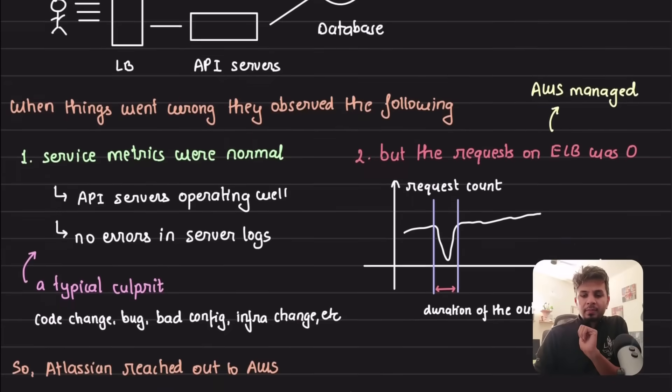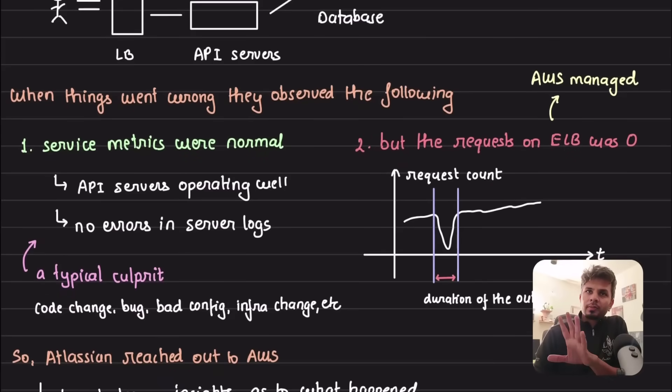Now what exactly happened? When things went wrong, they observed that their service metrics were fine. The API servers were healthy, memory utilization was not high, CPU utilization was not high. There were no error logs, no exceptions logged. But the requests on their load balancer was zero. They could see a visible dip literally taking it to zero during this outage duration.